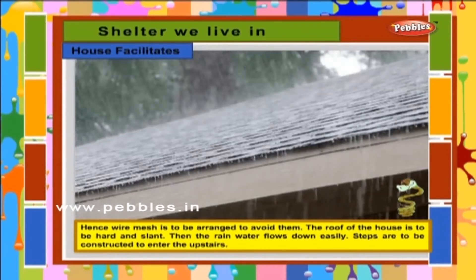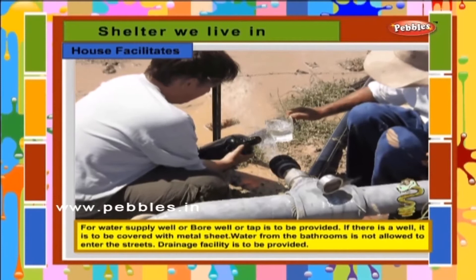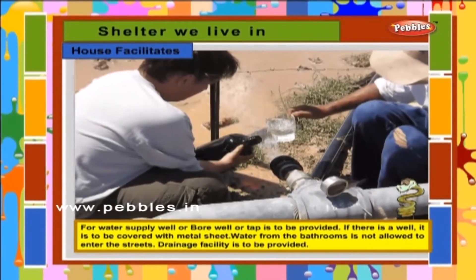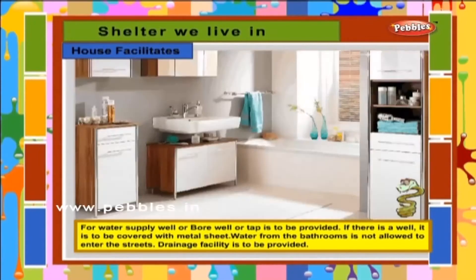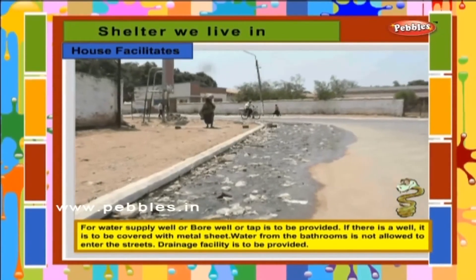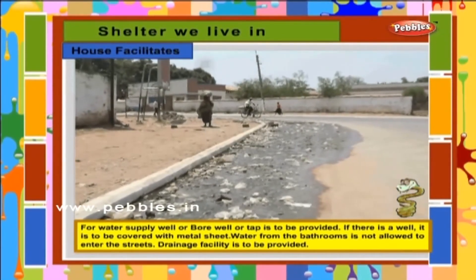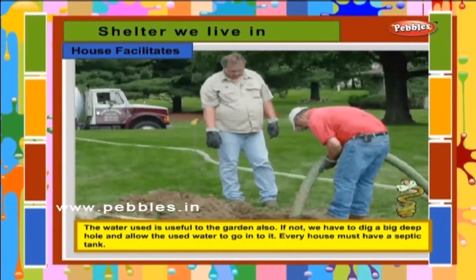Steps are to be constructed to enter upstairs. For water supply, a well, bore well or tap is to be provided. If there is a well, it is to be covered with a metal sheet. Water from bathrooms is not allowed to enter the streets. Drainage facility is to be provided, and the used water is also useful for the garden. If not, we have to dig a big deep hole and allow the used water to go into it.